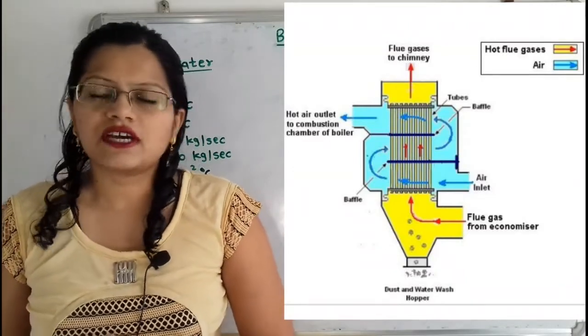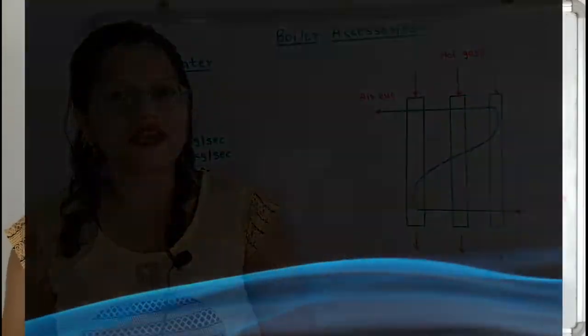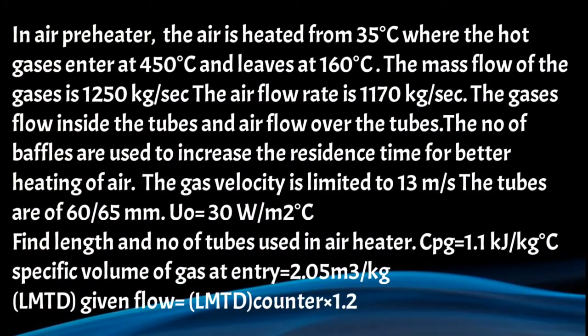Now I will read the given question. In an air preheater, air is heated from 35 degree Celsius, where the hot gases enter at 450 degree Celsius and exit at 160 degree Celsius. The mass flow of gases is 1250 kilogram per second and the air flow rate is 1170 kilogram per second.